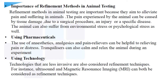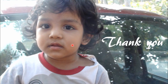Refinement methods in animal testing aim to alleviate pain and suffering in animals. Pain can be caused by tissue damage from surgical procedures, injury, specific disease, environmental stress, or psychological stress. The use of anesthetics, analgesics, and pain relievers can help relieve pain or distress, and tranquilizers can calm and relax animals during experiments. Less invasive technologies such as ultrasound or magnetic resonance imaging (MRI) are also considered refinement techniques.